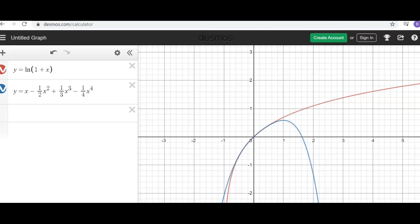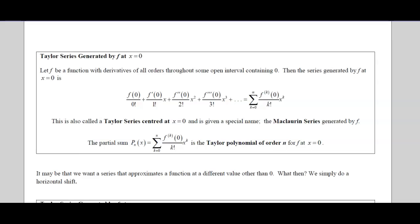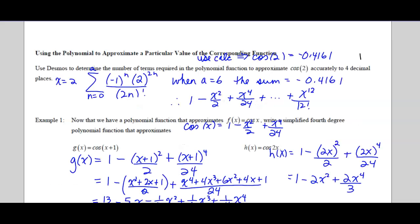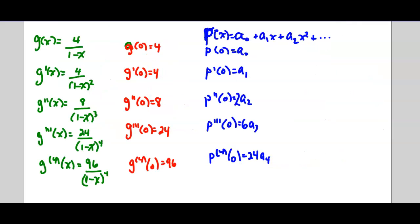So let's go back to our document and go back to the next function, which is 4 over 1 minus x. Again, I've got a new screen for that. You can pause this if you need to as you're finding the derivatives. So I've got in green on the left g(x), all the first four derivatives underneath. Then in red g(0), and all the derivatives at 0.